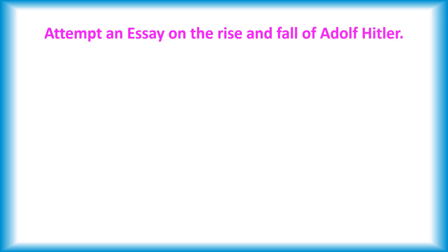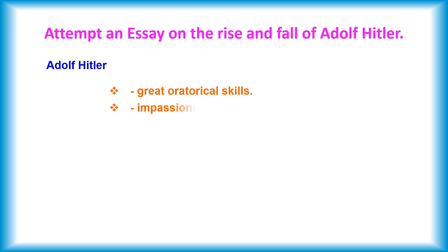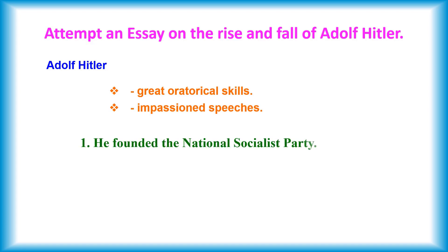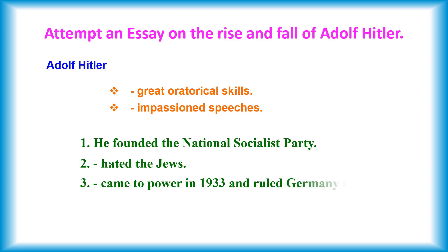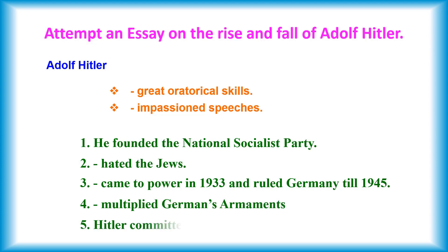The next question is: Attempt an essay on the rise and fall of Adolf Hitler. The answer is as follows. Adolf Hitler had great oratorical skills and impassioned speeches. 1. He founded the National Socialist Party. 2. He hated the Jews. 3. Came to power in 1933 and ruled Germany till 1945. 4. Multiplied Germans' armaments. 5. Hitler committed suicide in April 1945.